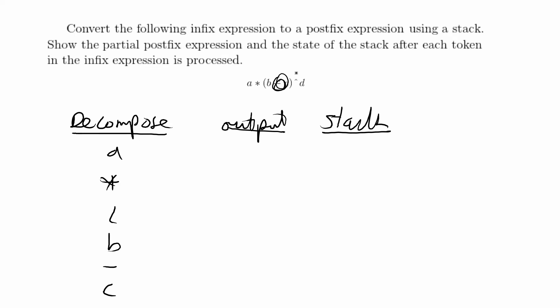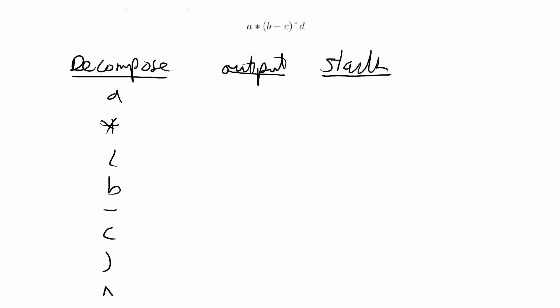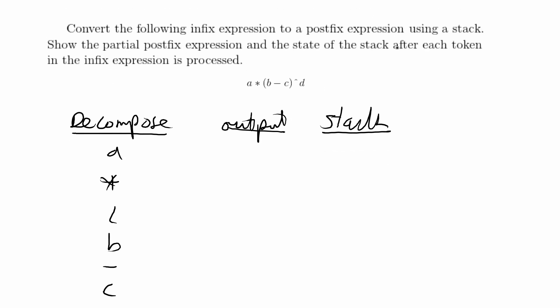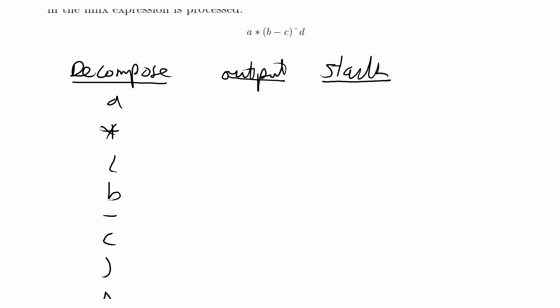If you have multiple operators in between your parentheses, you also pop those using precedence as well. Higher precedence operations are popped before lower precedence operations. The operations with lower precedence are on the outside. Let's just go ahead and do this example.